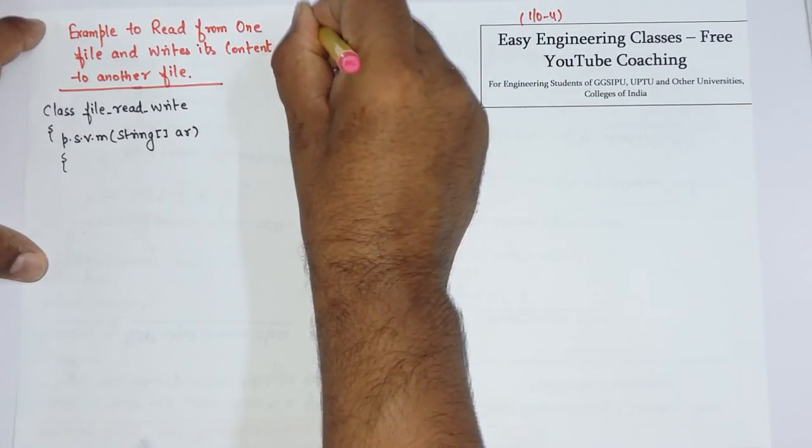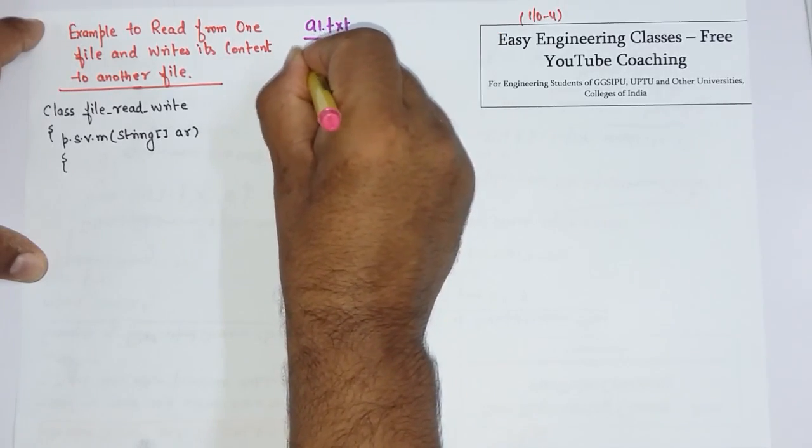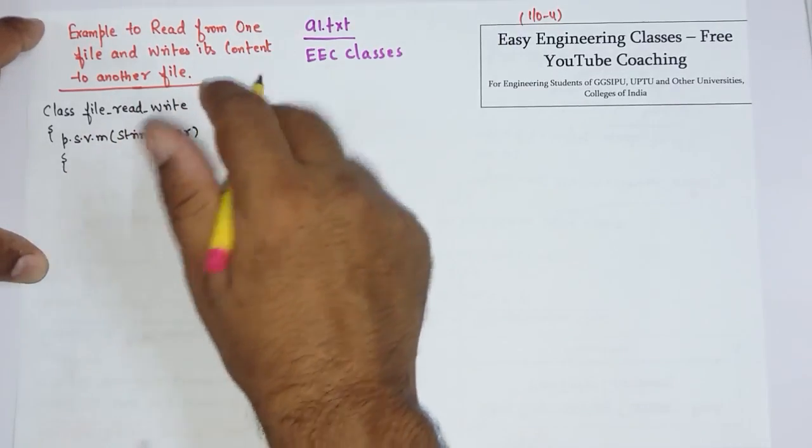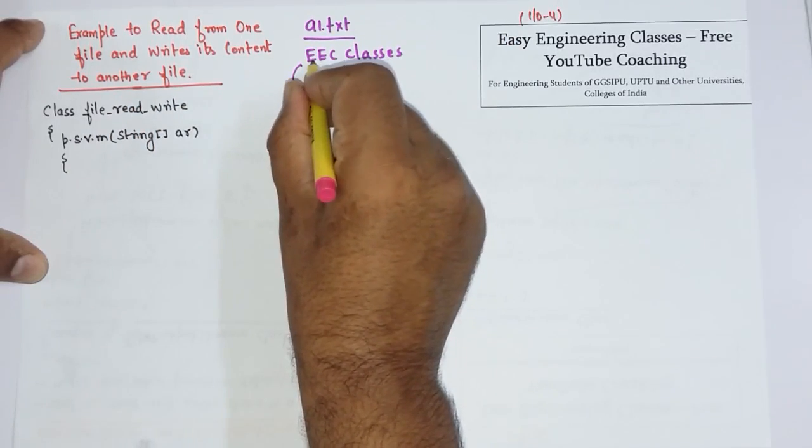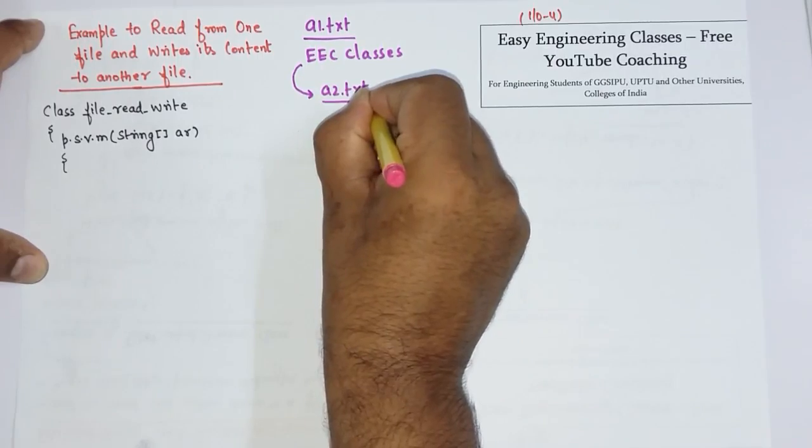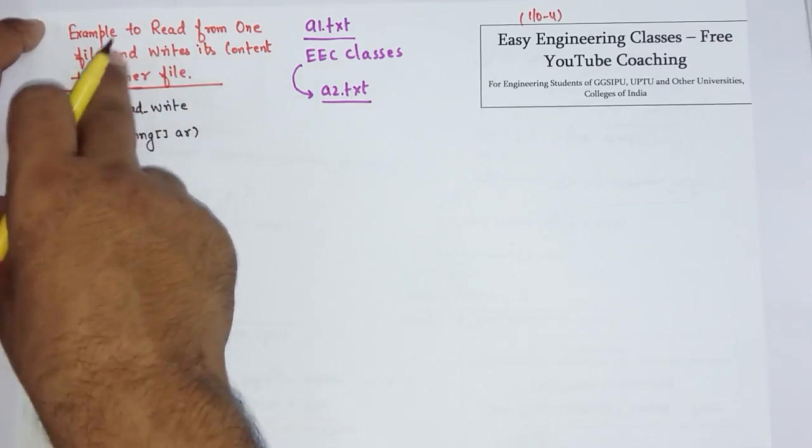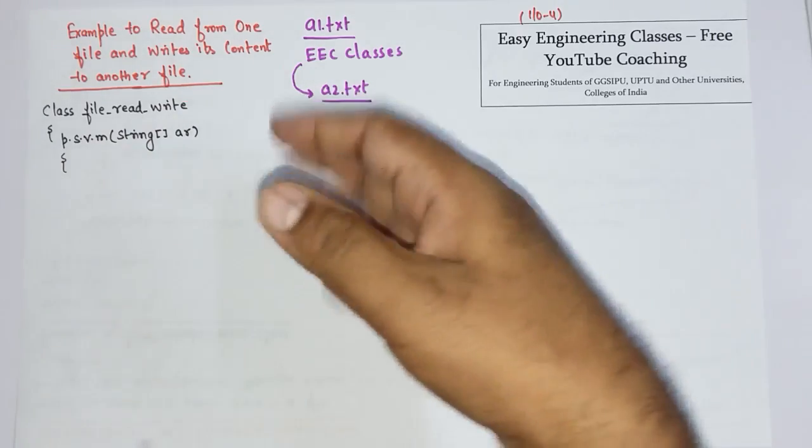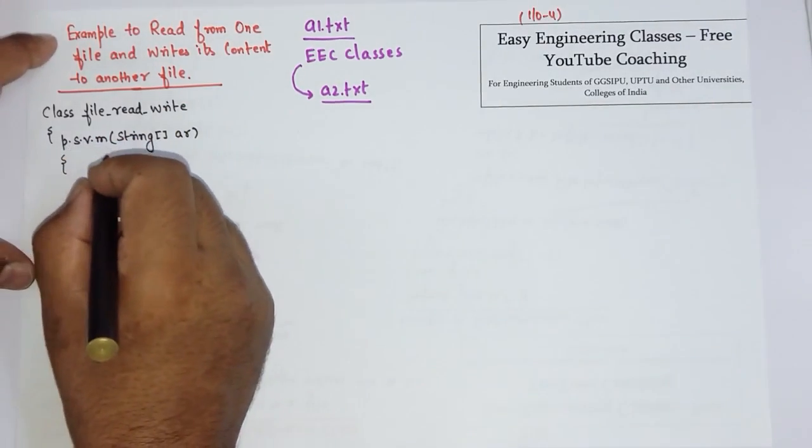One is a1.txt which has content like 'EEC classes'. The question is: you have to read the contents of a1.txt file and write the contents to another file named a2.txt. In theory exams, a common question is 'Write a Java program to read content and write its content to another file.' So in this lecture we will see how it is actually done. It is very simple.